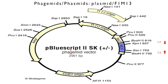However, the infection of a bacterial host containing a phagemid with a helper phage — for example, VCS-M13 or M13K07 — provides the necessary viral components to enable single stranded DNA replication and packaging of phagemid DNA into phagemid particles.